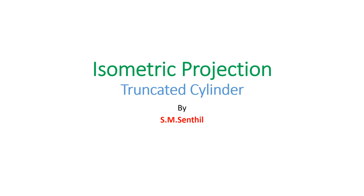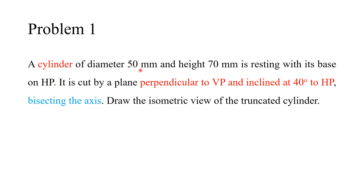Welcome to today's session on isometric projection of a truncated cylinder. The problem is: a cylinder of diameter 50 mm and height 70 mm is resting with its base on HP. It is cut by a plane perpendicular to VP and inclined at 40 degrees to HP. By sectioning the axis, draw the isometric view of the truncated cylinder.